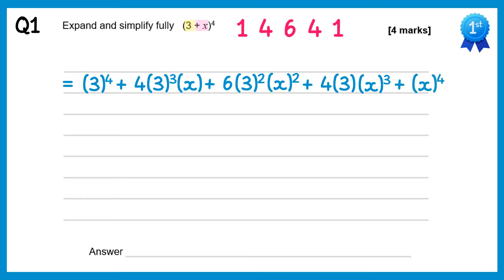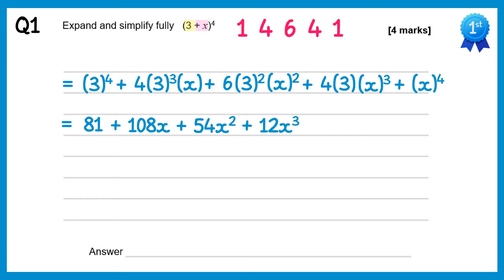Now we just simplify each term. 3 to the power 4 is 81. 3 cubed is 27, times that by 4 you get 108, so it's plus 108x. 3 squared is 9, times that by 6 you get 54, so 54x squared. 4 times 3 is 12, so we've got plus 12x cubed, and then finally x to the power 4.